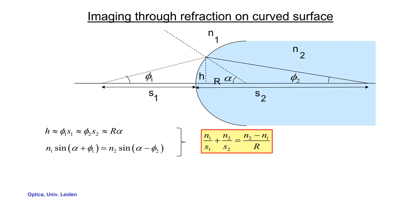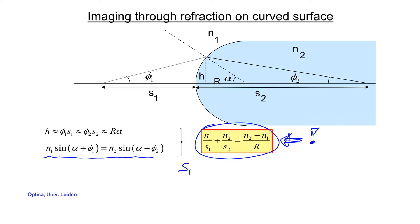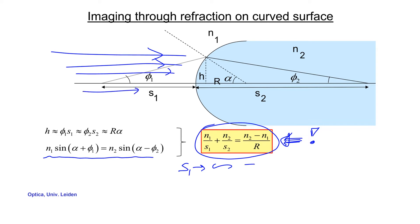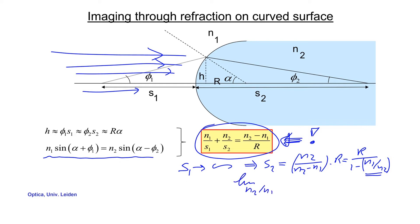This slide summarizes the previous derivation, which applied the paraxial limit to geometric expressions and yielded the important expression n1/s1 + n2/s2 = (n2 − n1)/r. Consider two limits. First, s1 → ∞, the case of a parallel incident beam: plugging in gives s2 = n2 r / (n2 − n1), written to show that only the ratio of refractive indices matters. If n2/n1 → ∞, then s2 ≈ r, as expected — a very high refractive index medium refracts strongly toward the surface normal and the focal length is close to the radius of curvature.